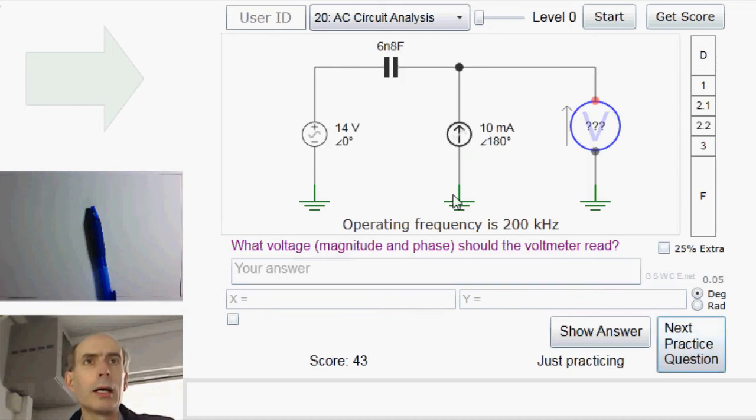Okay, here we have, in fact, it's exactly the same circuit, it's just drawn differently. We have 10 mA at 180 degrees, which must flow through the capacitor because it cannot flow this way, because this is an ideal voltmeter and has an infinite resistance.